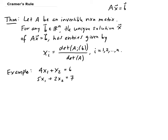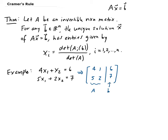First, this system can be written in matrix form as A = [4, 1; 5, 2], augmented with the vector B. So this is matrix A and this is your B vector.